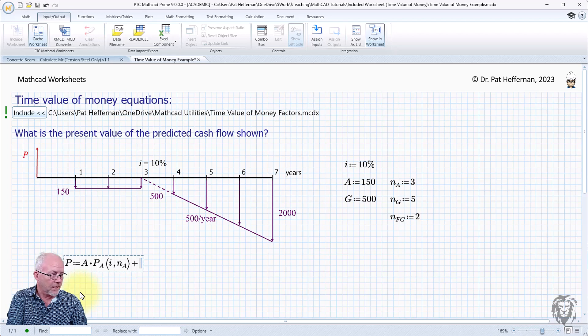And now let's take care of that gradient. So let me see. It's a gradient multiplied by its factor. P given G function of the interest and its duration.